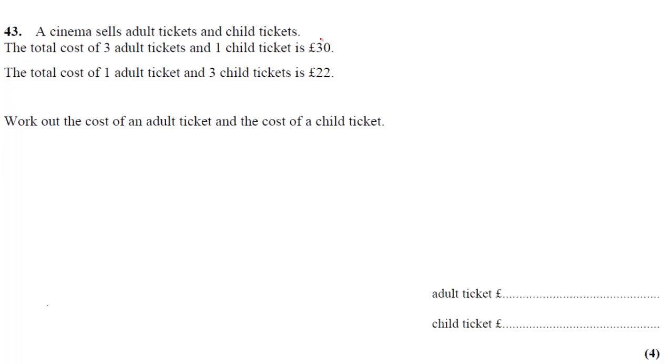So 3 adult tickets and 1 child ticket costs £30. The total cost of 1 adult ticket and 3 child tickets is £22. Work out the cost of an adult ticket and the cost of a child ticket. Once you look at this question, you should recognize that you need to use simultaneous